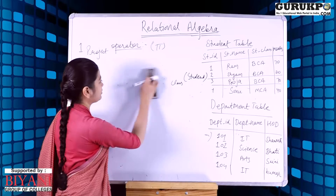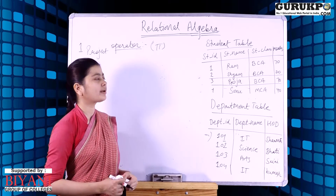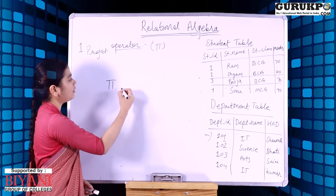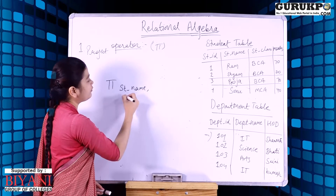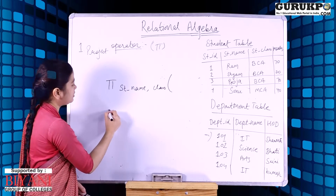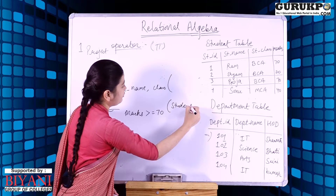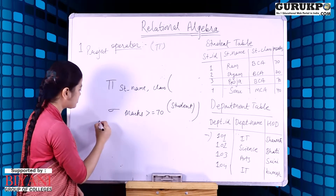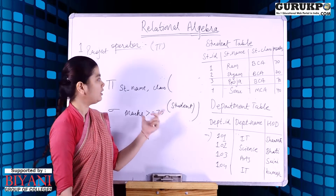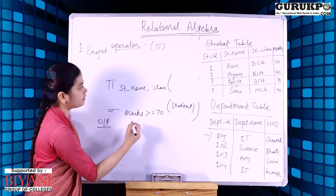Let's take another example of the project operator combined with the select operator. If we want the student name and class of students whose marks are greater than or equal to 70, we write the query as pi_{student_name, class}(sigma_{marks >= 70}(student)). It checks the condition where marks are greater than or equal to 70 and shows student name and class as output.